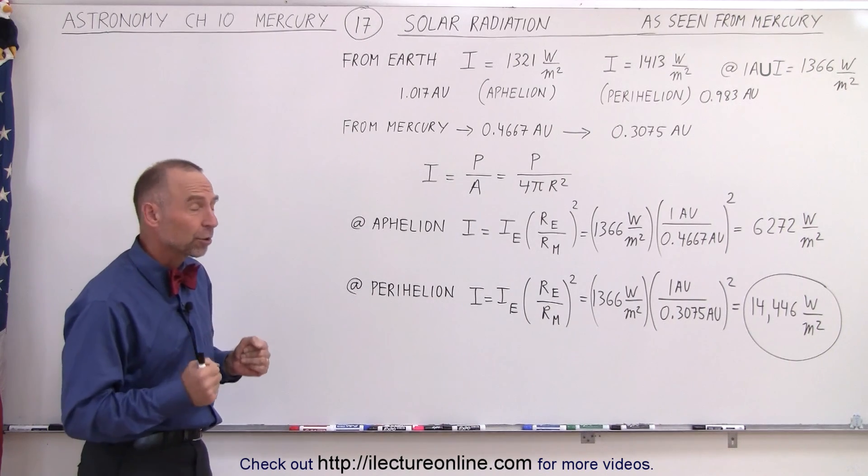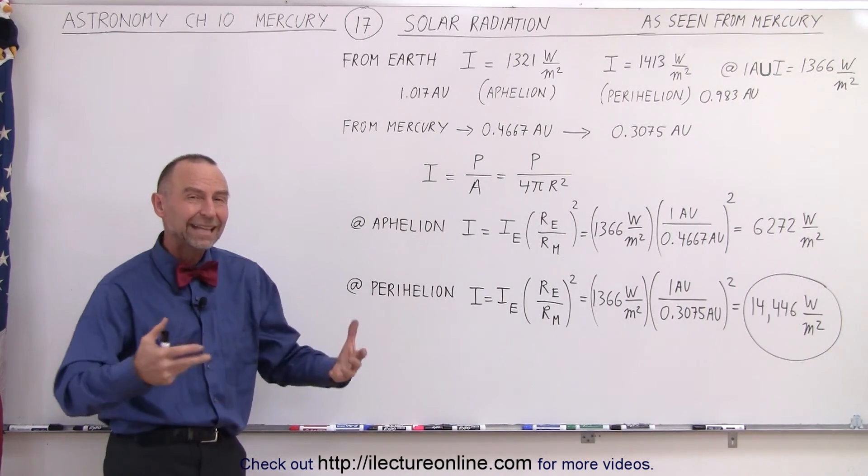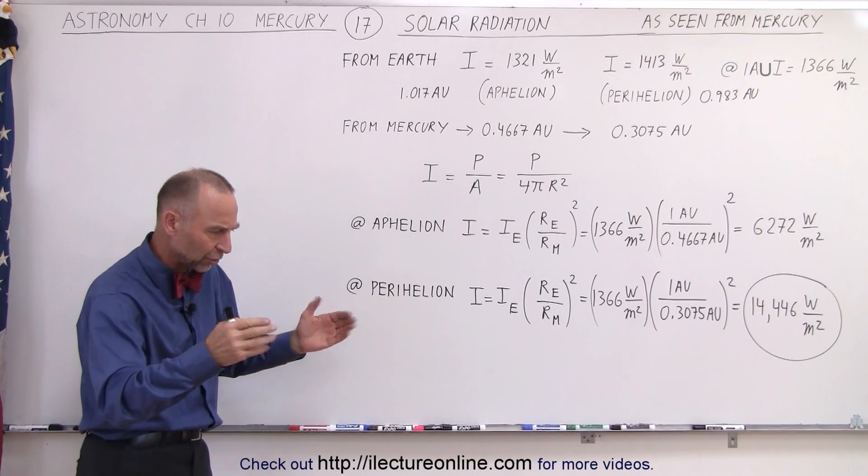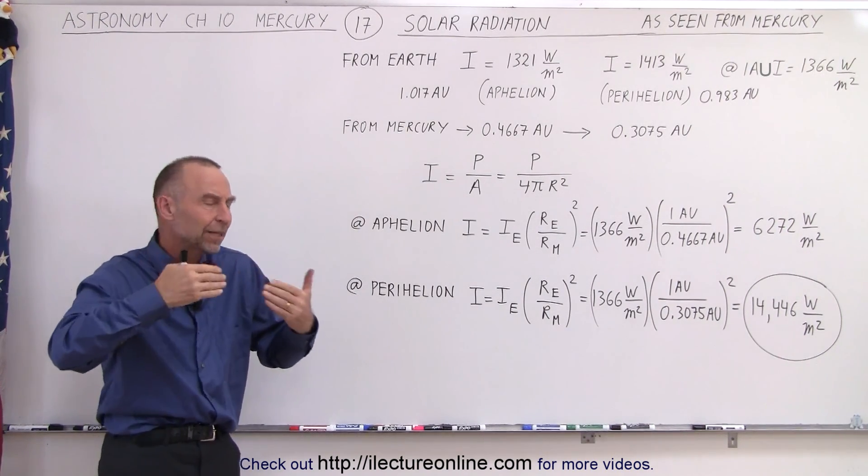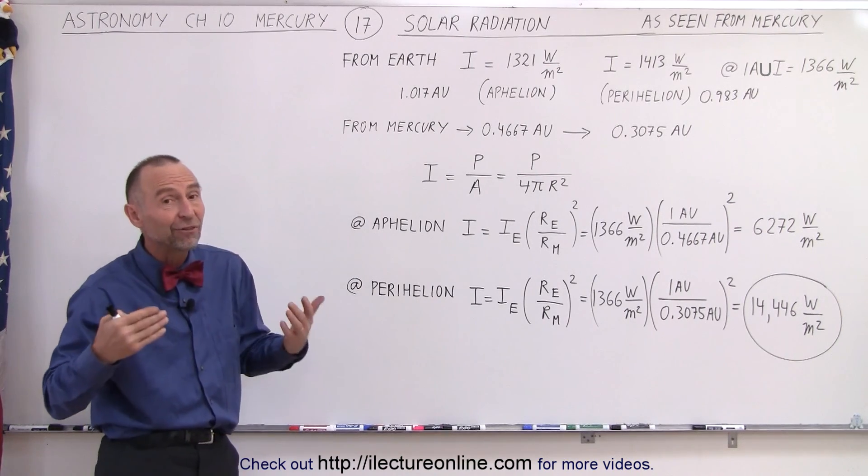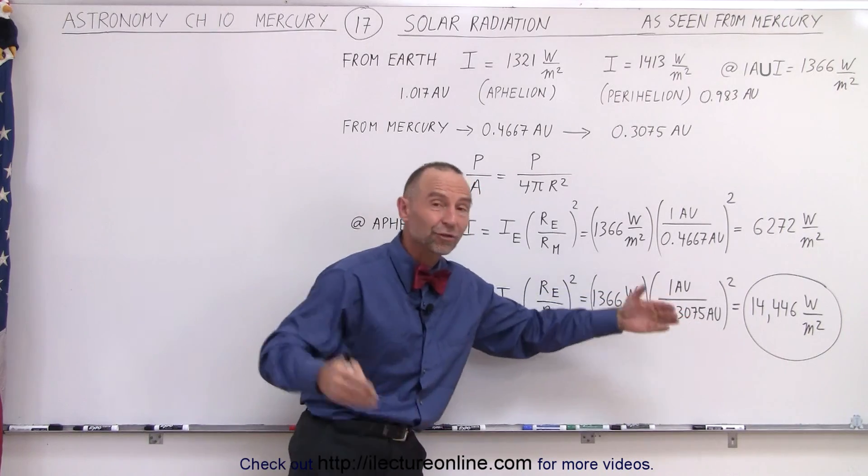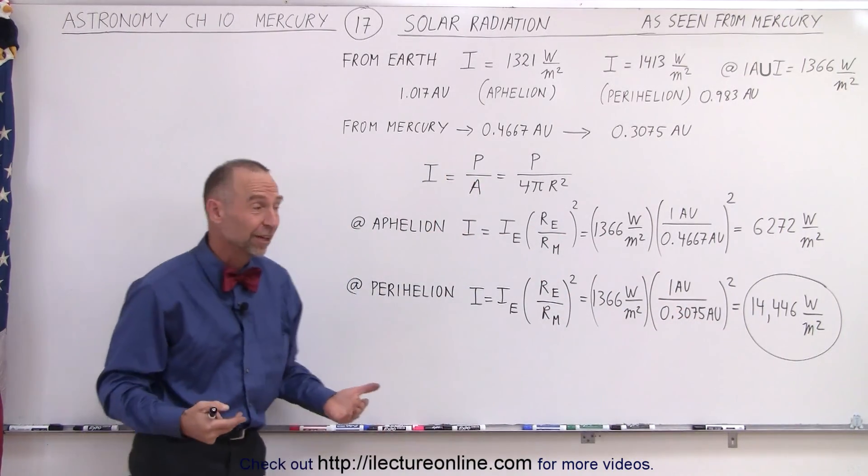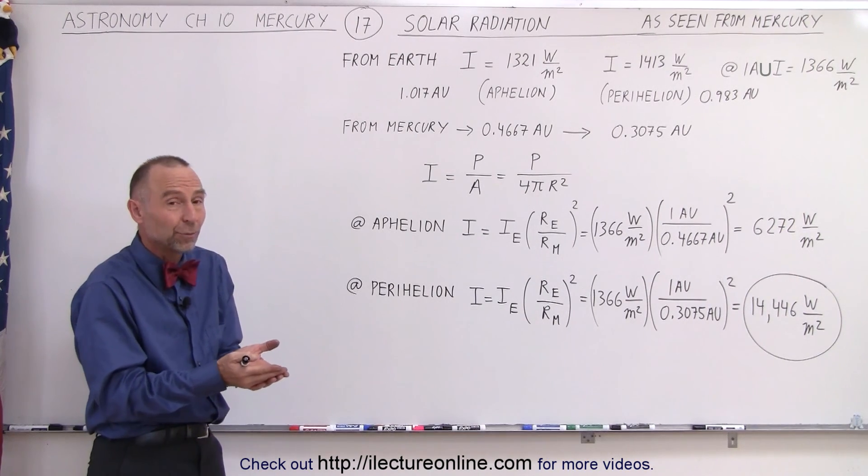Every square meter of the surface of Mercury receives as much heat as what would be deposited by 10 space heaters. Think about those electrical space heaters that you plug in, set to the highest setting, they typically give you about 1500 watts. Imagine you have 10 of those for every square meter of surface, that would be one of those for every square foot of the surface of Mercury.